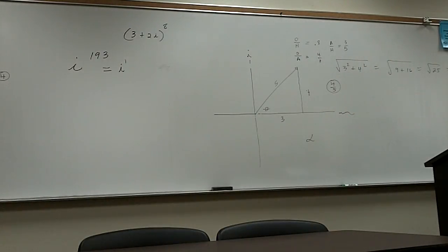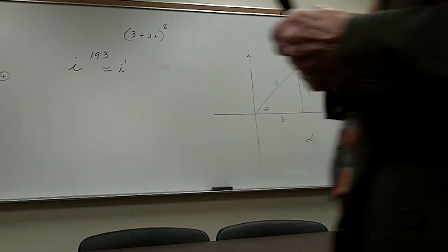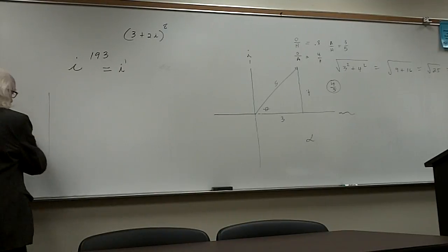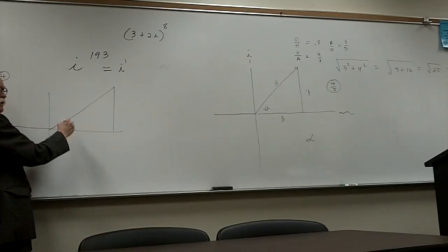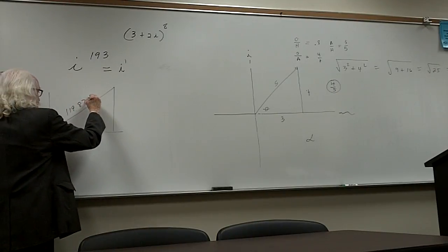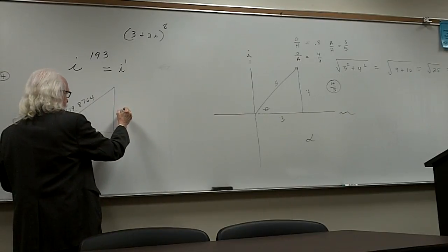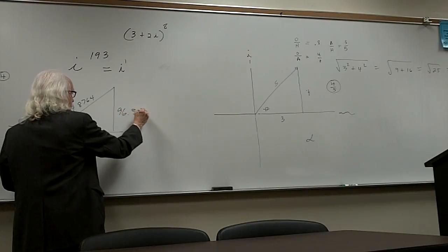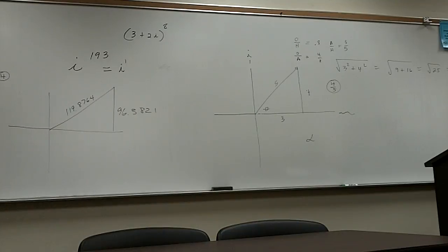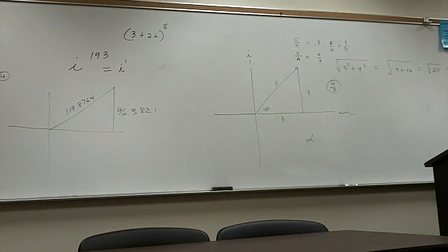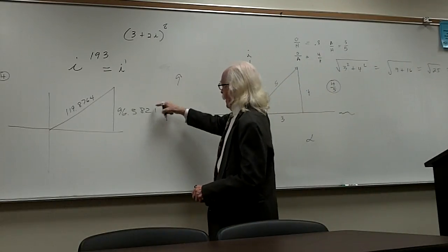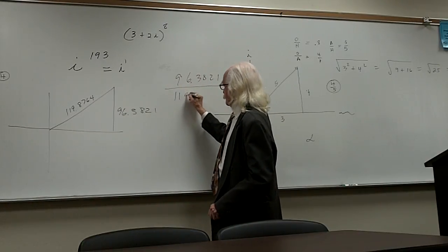In the old days without a calculator, you might be given numbers like 119.8764 for one side and 96.3821 for the hypotenuse. You'd have to divide the opposite by the hypotenuse, and without a calculator you had to use a slide rule, then look up the result in a trig table book to find the angle.